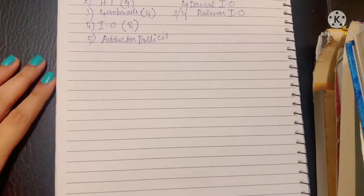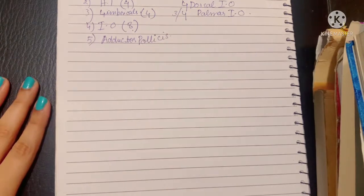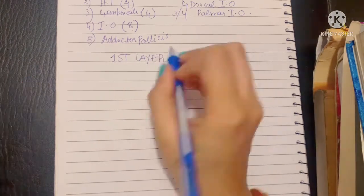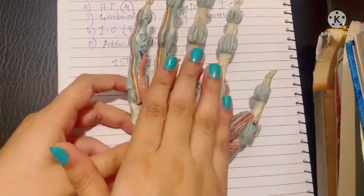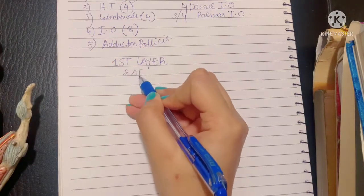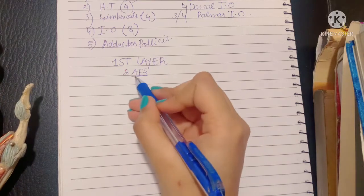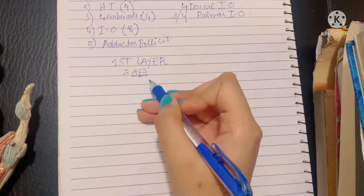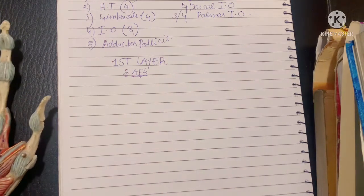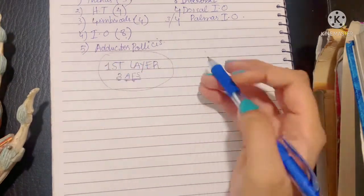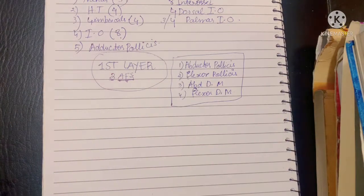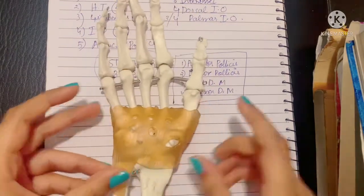Now let's talk about these muscles in more depth with their origin, insertion, and layering. Let's start with the first layer — the most superficial layer of the palm, the one lying closest to the skin. The first layer includes the two AFs: A for abductor and F for flexors — the abductor digiti minimi and the abductor pollicis brevis, the flexor digiti minimi and the flexor pollicis brevis. These are forming the first layer of the palm, which is very important from an exam point of view.